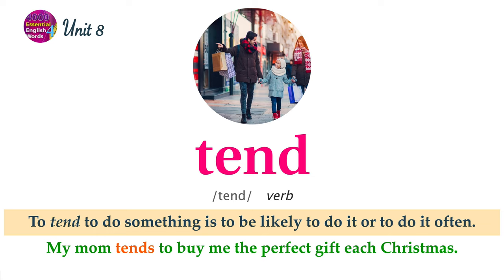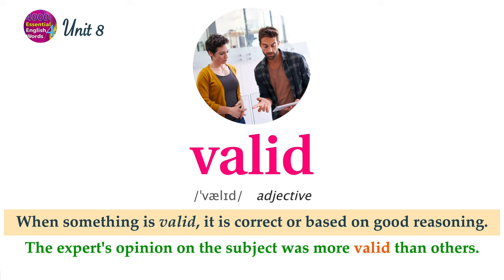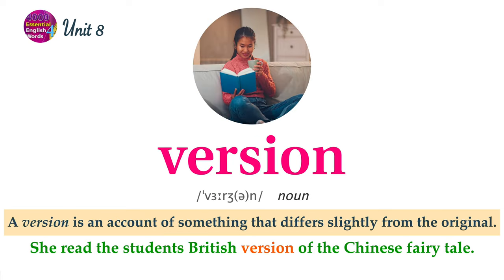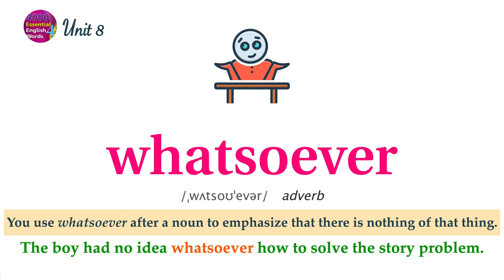To tend to do something is to be likely to do it or to do it often. My mom tends to buy me the perfect gift each Christmas. When something is valid, it is correct or based on good reasoning. The expert's opinion on the subject was more valid than others. A version is an account of something that differs slightly from the original. She read the student's British version of the Chinese fairy tale. You use whatsoever after a noun to emphasize that there is nothing of that thing. The boy had no idea whatsoever how to solve the story problem.